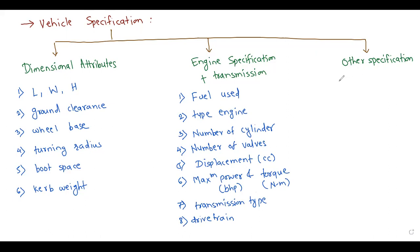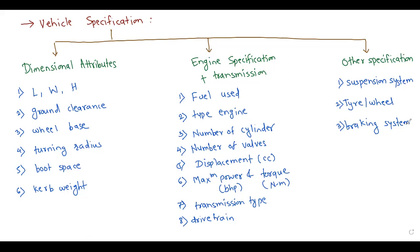For the third category — other specifications — we talk about suspension type, tire or wheel specification, and the braking system. Apart from this, there are some extra features like ABS, airbags, and other safety features. These are the overall things you can use to compare any two vehicles based on these attributes. You can take a screenshot or note down all these points, as they are very important.